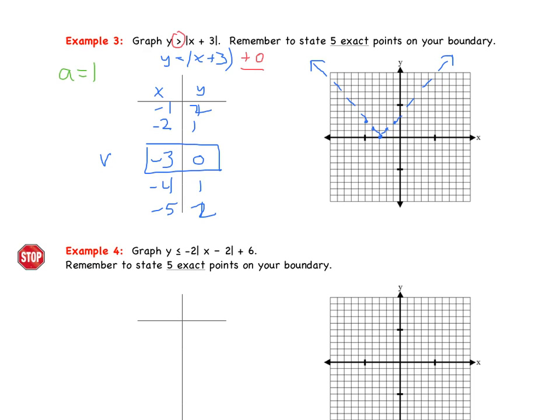All right, and the last thing we have to think about is shading. So we want to test a point. Now, this point cannot be on our boundary. So we can test (0, 0) again. So when we test the point, we have 0 > |0 + 3|. Which is 0 > |3|. Which is 0 > 3. Hopefully we recognize this is a false statement. It's not true. And now with absolute value inequalities, we think outside or inside. Our point is outside of the V. And we said it was false. So that means we're going to shade the inside of our V, of our absolute value. So our graph will look like that.